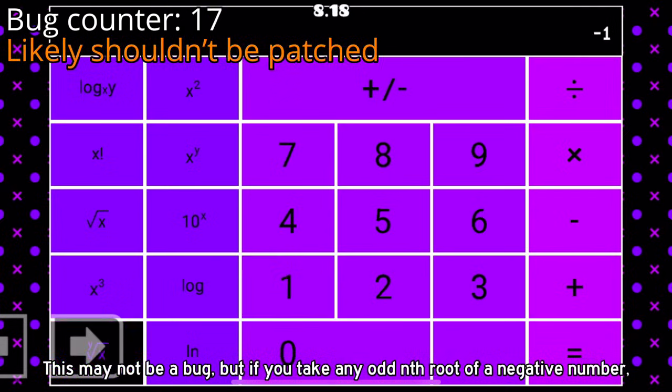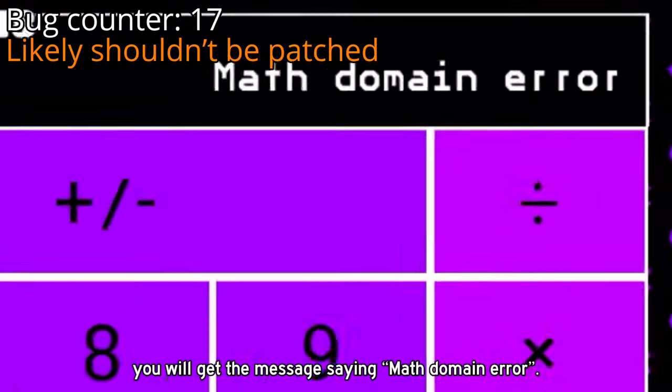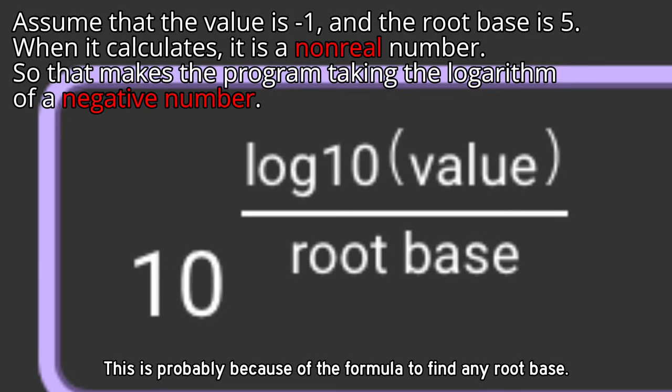This may not be a bug, but if you take any odd nth root of a negative number, you will get the message saying math domain error. This is probably because of the formula to find any root base.